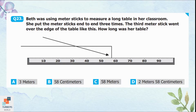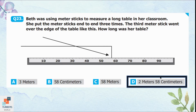Question 23: Beth used meter sticks to measure a long table, placing them end to end. The third meter stick went over the edge of the table. This means she had already measured two complete meters, and the mark on the third meter stick ended at 58 centimeters. So the length of the table is 2 meters and 58 centimeters — option D is correct.